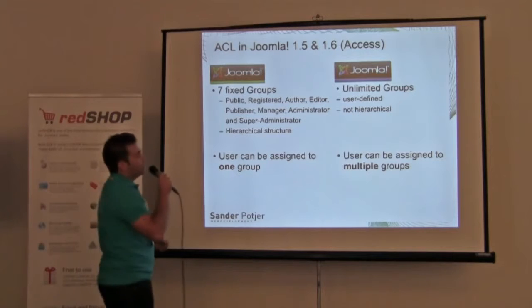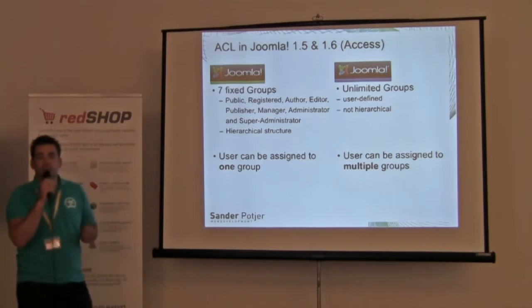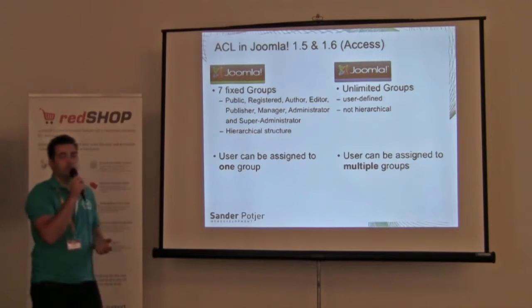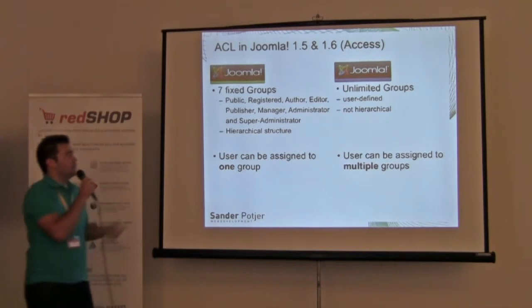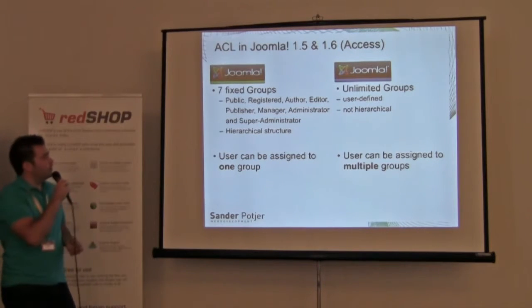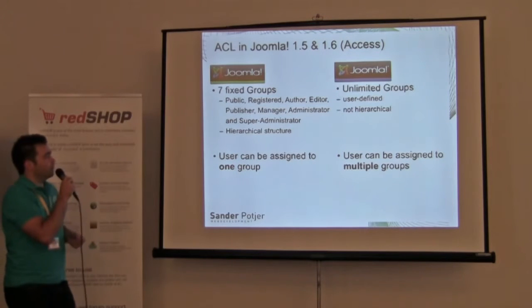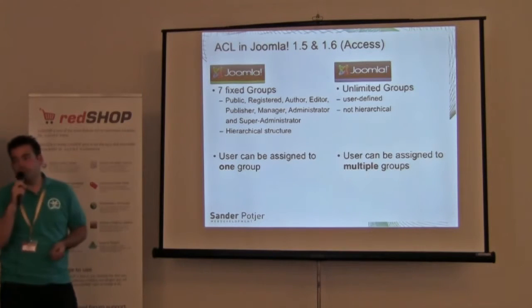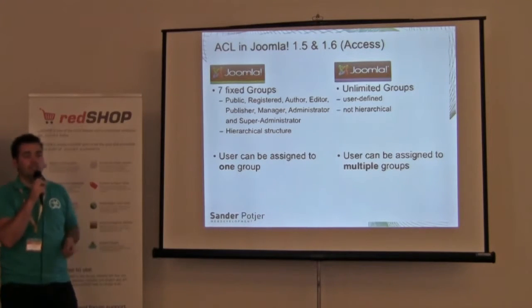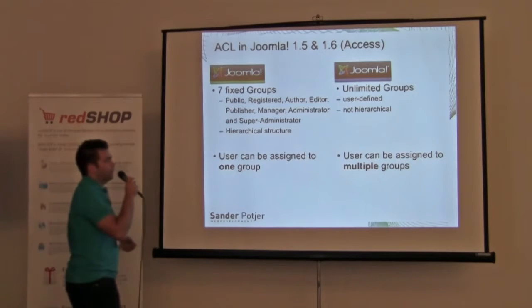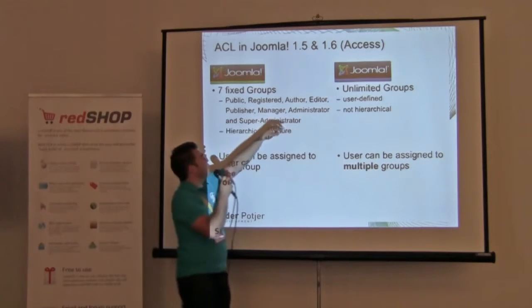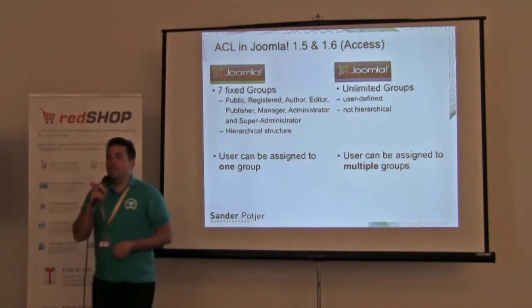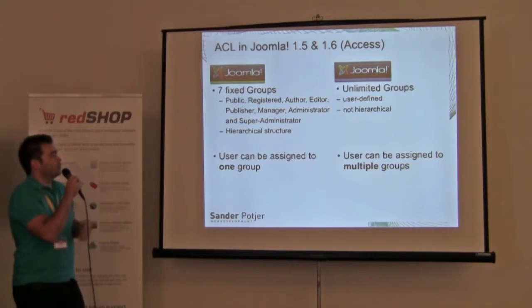We had a kind of ACL in 1.5 already, but it was all fixed — you weren't able to specify any specific needs for a user group. In 1.5, we had seven fixed groups: public, registered, author, editor, publisher, manager, administrator, and super administrator. Most of us were using registered, administrator, and super administrator. A user in 1.5 was assigned to exactly one group. In 1.6, we can define unlimited user groups, create our own entire structure, and assign a specific user to multiple groups.